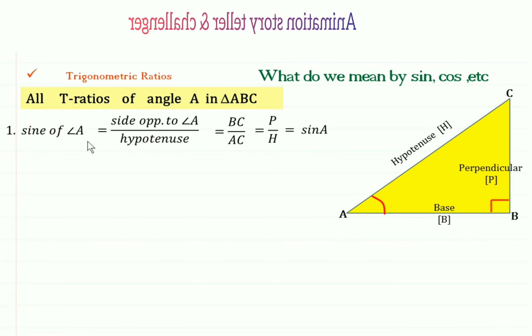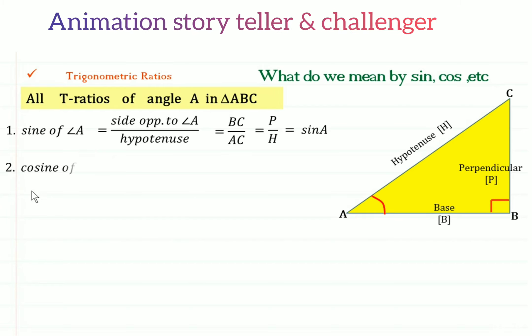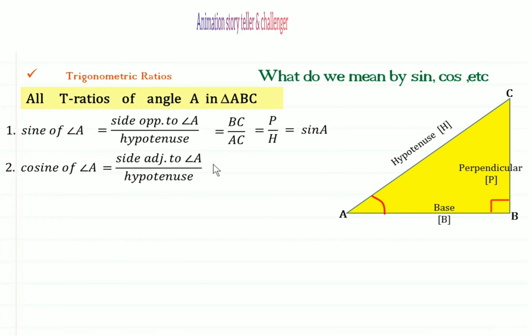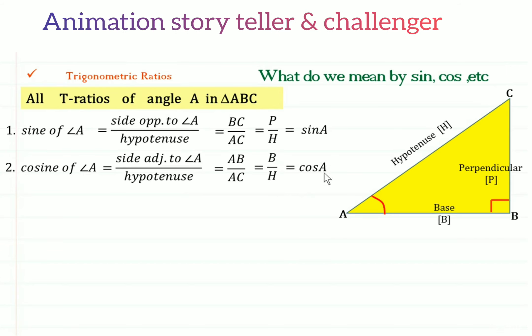Likewise, we have defined other T-ratios. Second T-ratio is cosine of angle A. It is the ratio of the side adjacent to angle A to hypotenuse, which is equal to AB upon AC, which can be written as equal to B upon H, that is base upon hypotenuse.